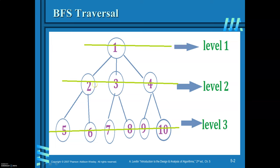Then 2 comes first, so explore all its adjacent vertices: 5 and 6. Then for 3, the adjacent vertices are 7 and 8. Then for 4, it is 9 and 10. So look at the order in which you are visiting through all the vertices of the graph: first 1, 2, 3, 4, then 5, 6, then 7, 8, then 9, 10. This is how you are visiting through the vertices of the graph — level by level.